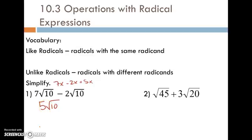Number 2 is an example of unlike radicals. It's because this is 45 and this is 20. So we're going to try to simplify them first using what we did in a previous lesson. So I'm looking at this √45 and I know, thinking of my perfect squares,